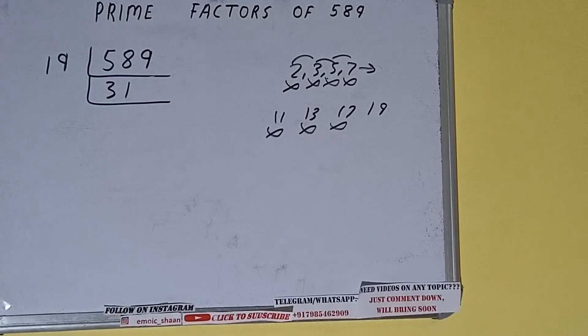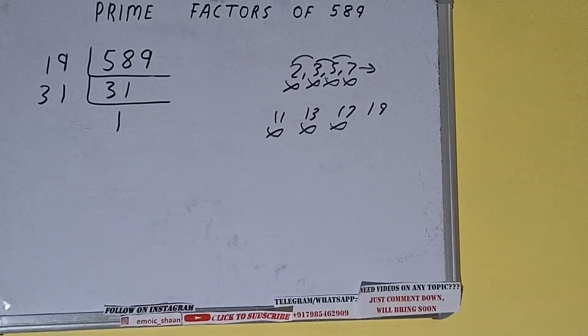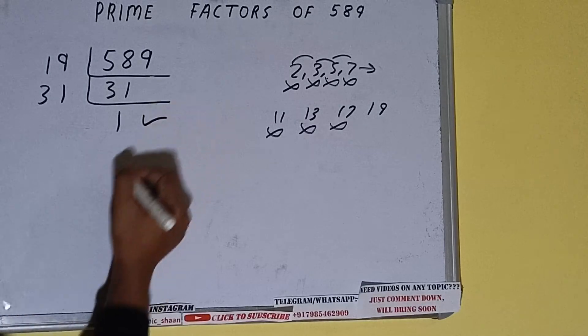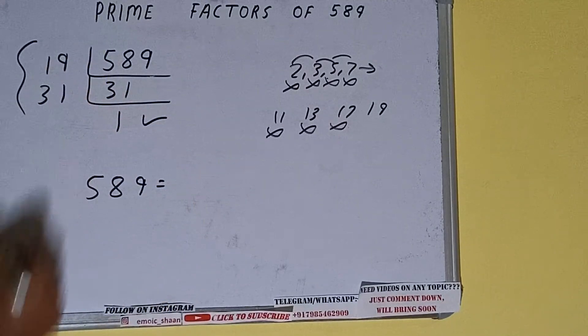And 31 is also a prime number, so it is only divisible by itself, that is 31. And once we do so, we'll be getting 1. Once we get 1, we need to stop and do one last thing. That is, prime factors of 589 equals whatever we have on the left-hand side, that is 19 times 31. That will be the answer.